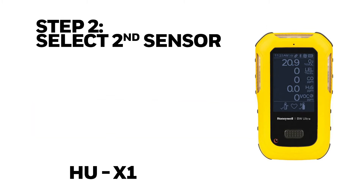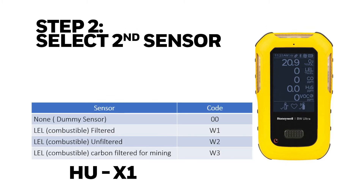Step 2: select the second sensor. This step is to choose the combustible sensor. Here we have a few options: the dummy sensor, the combustible sensor with the filter, the combustible sensor without the filter, and the combustible sensor with the carbon filter — this is for mining. In this example I'm going to choose the combustible sensor with the filter, code W1.